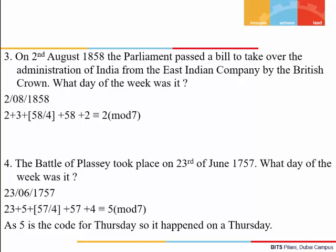Example 3: For the date 2nd August 1858, d = 2, m = 3 (August's code), y = 58, ⌊58/4⌋, and since the year is in the 1800s we add c = 2. The total is congruent to 2 mod 7, so the day of the week was Monday.